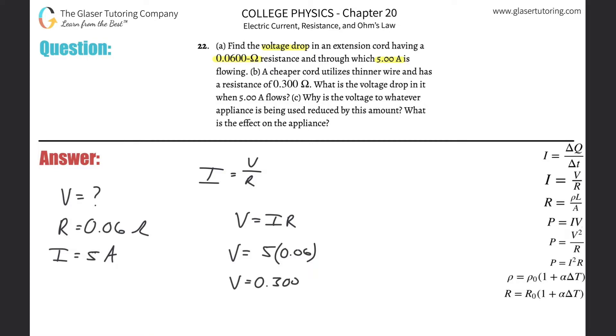And I guess 2 sig figs, 0.30 volts. So that's the potential difference and the voltage basically being supplied, more or less. So this was letter A. Let's do letter B.